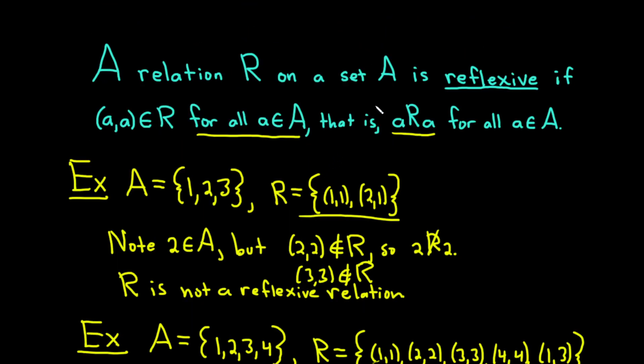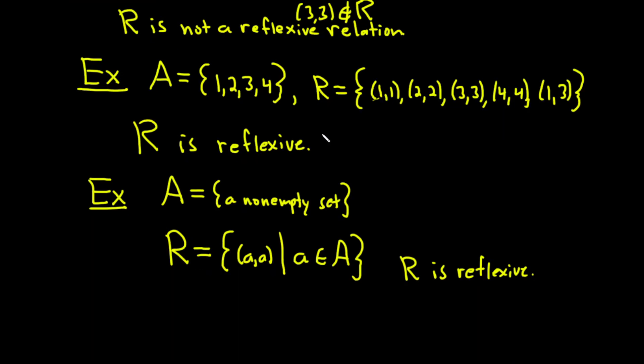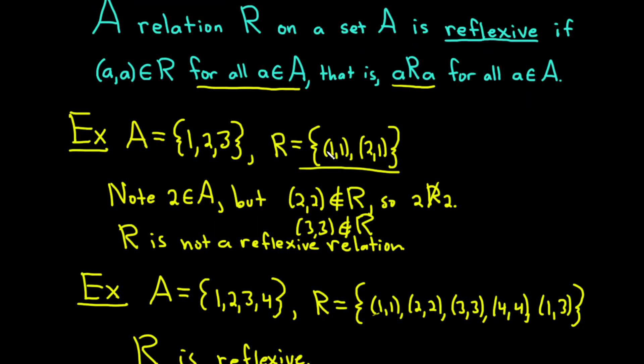Reflexive relations are important because it's one of the conditions for a relation to be what's called an equivalence relation. A relation is called an equivalence relation if it is reflexive, symmetric, and transitive. Anyways, hopefully this has been a little bit of help with reflexive relations. And good luck.